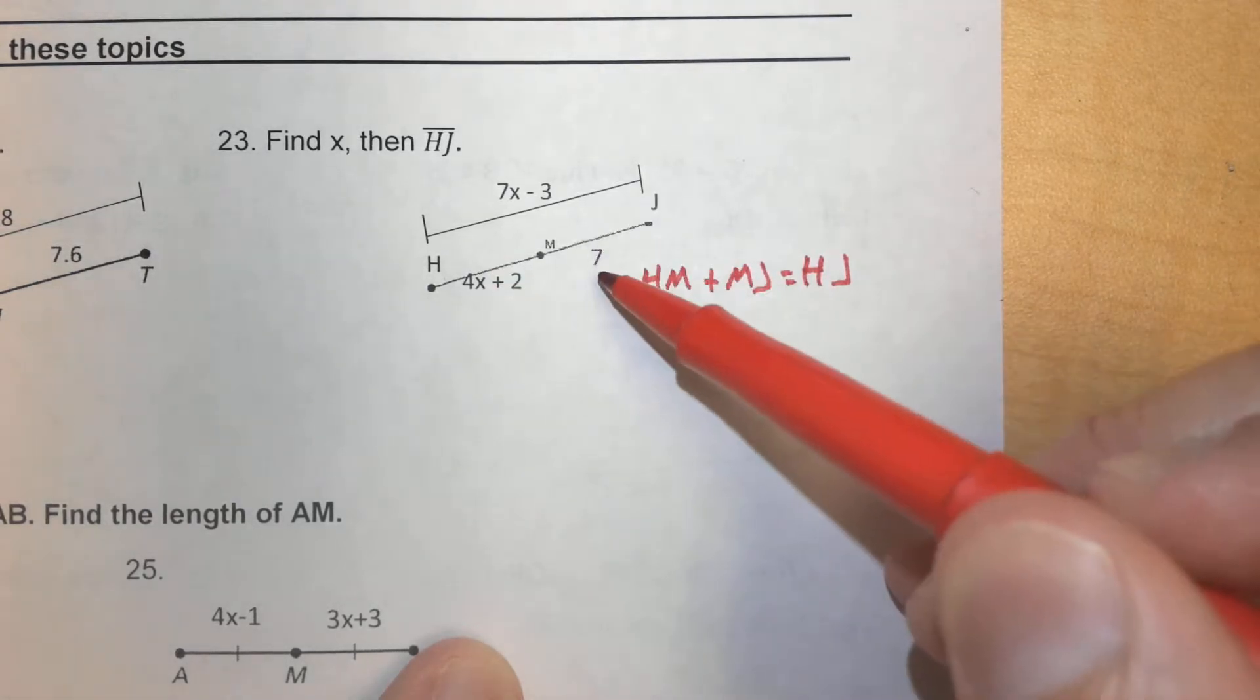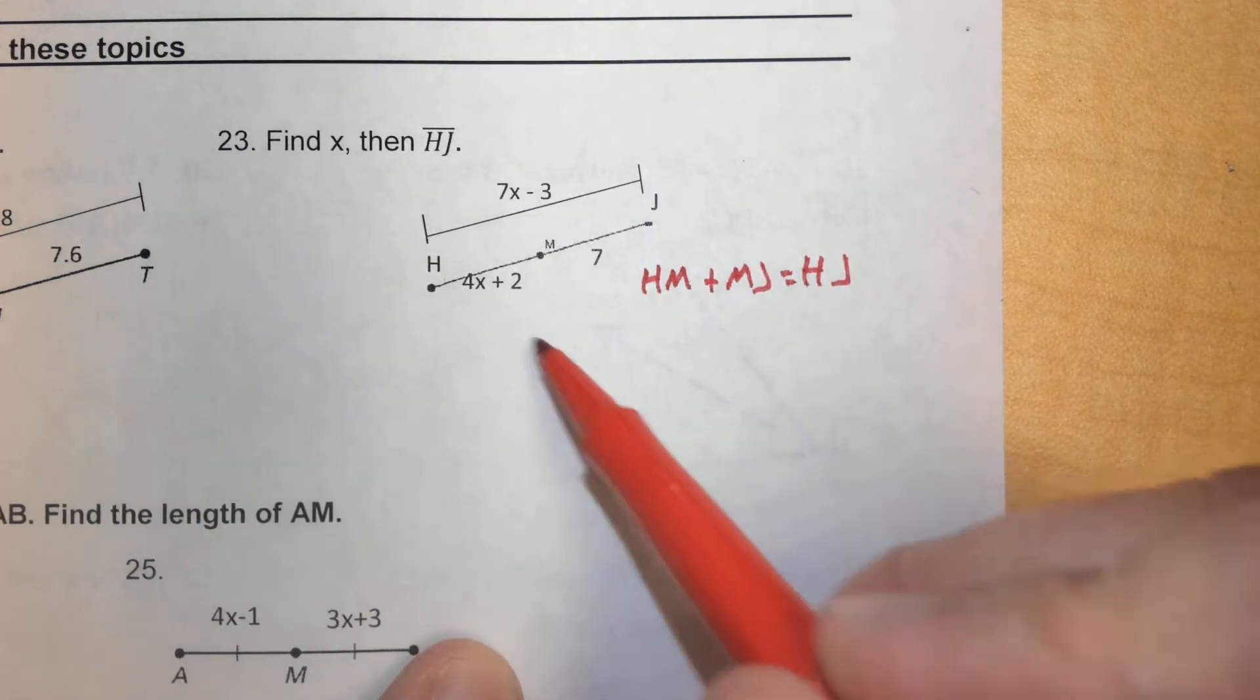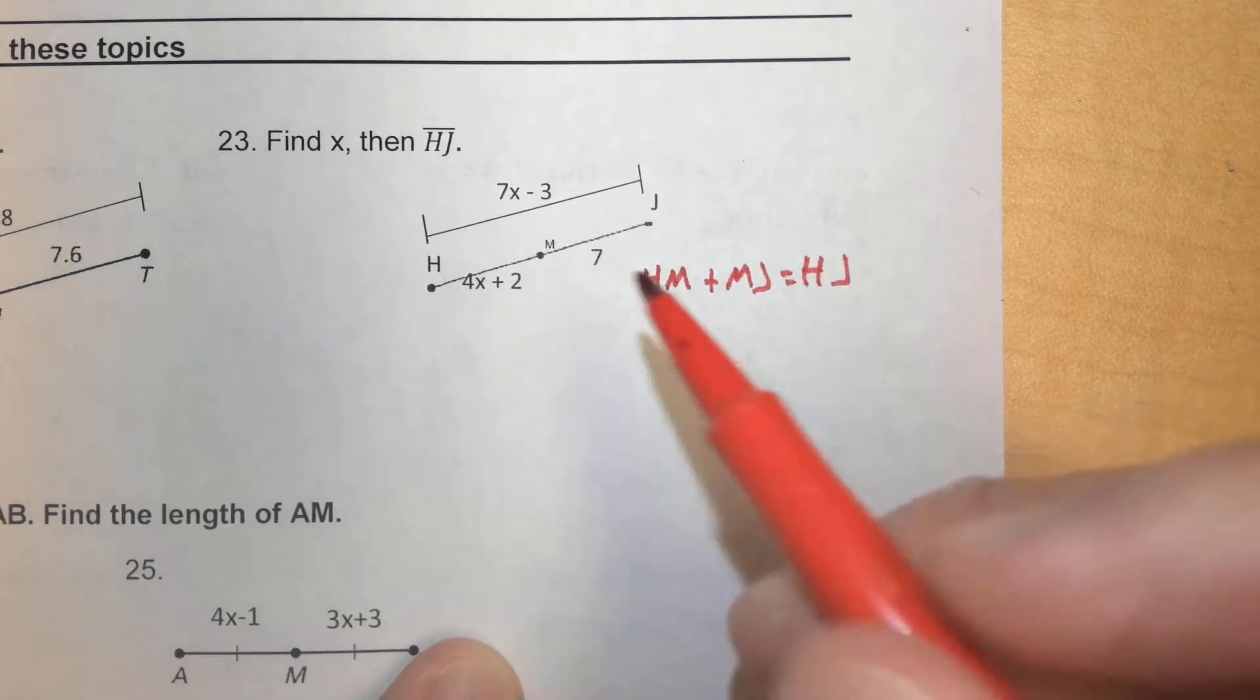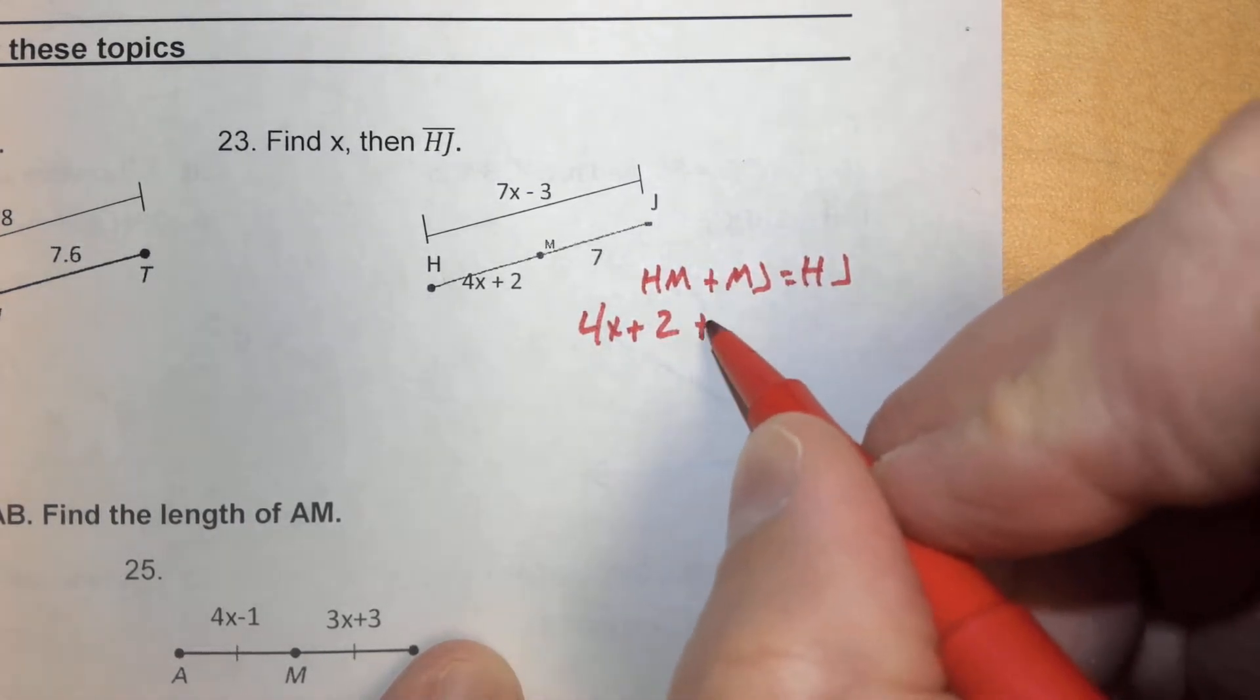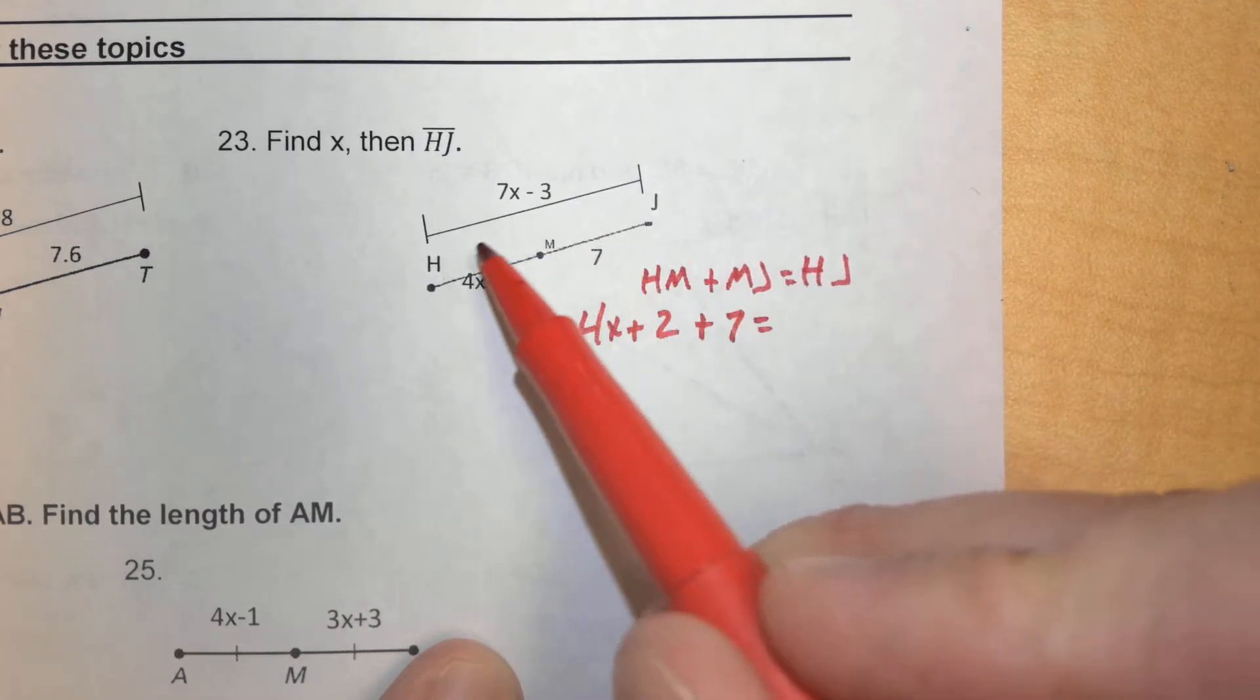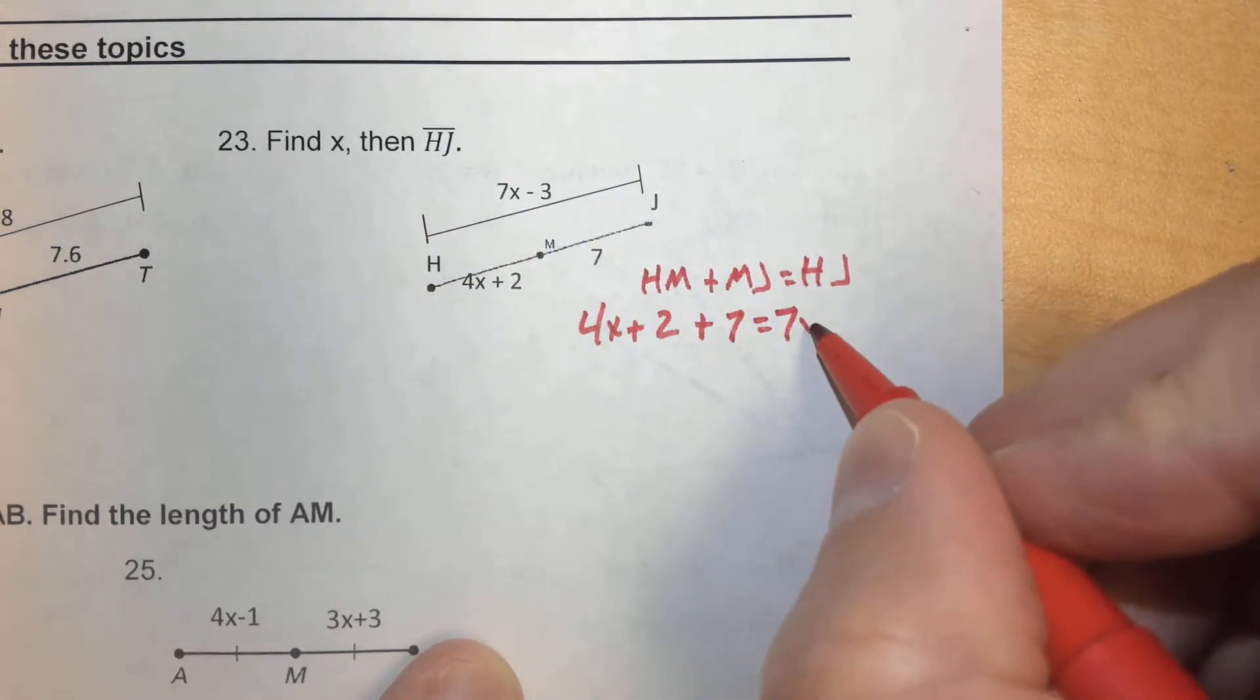Now that we know that we're adding these two together to equal the total from H to J, all we do is plug in everything that we know about each individual thing, and then we solve. So, for instance, H to M we know is 4X plus 2. So, we're going to start out with 4X plus 2. We're going to add M to J, which is 7, and that's going to equal the distance from H to J, which is given to us as 7X minus 3.